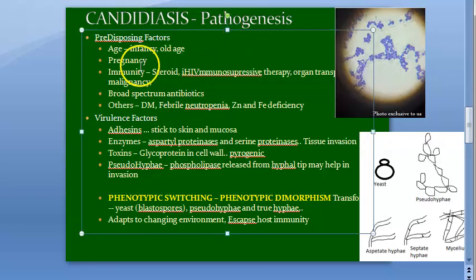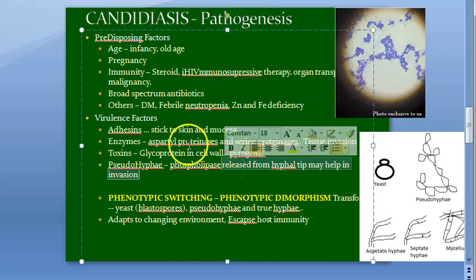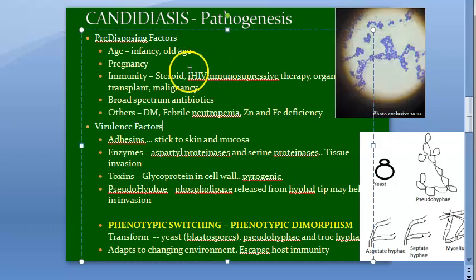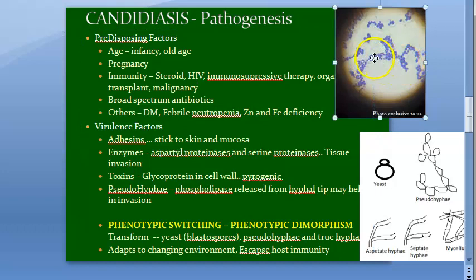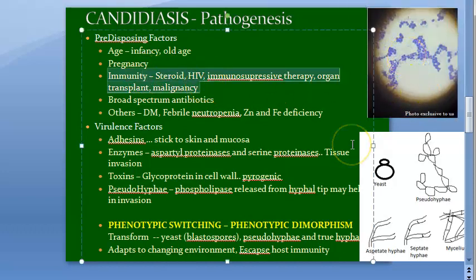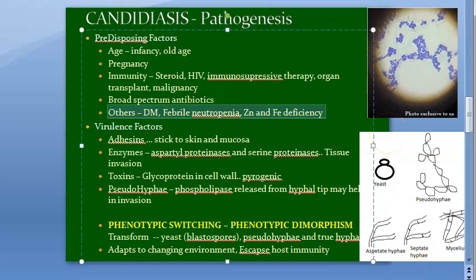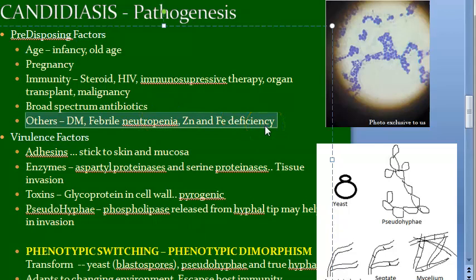The predisposing factors for Candida infection include age (very young or very old), pregnancy, and low immunity due to steroids, HIV, immunosuppressive therapy, organ transplant, or malignancy. Broad spectrum antibiotics like tetracycline and doxycycline kill protective bacteria, leading to opportunistic infections — this is called a supra-infection. Other predisposing factors include diabetes mellitus, febrile neutropenia, and zinc and iron deficiency.